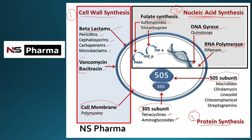All other aminoglycosides (other than streptomycin), such as gentamicin and tobramycin, bind with the 30S, 50S, and the 30S-50S interface to inhibit protein synthesis. Tetracycline binds with the 30S ribosome only. 50S subunit inhibitors include macrolide antibiotics (clarithromycin, azithromycin), clindamycin, linezolid, chloramphenicol, and streptogramins.